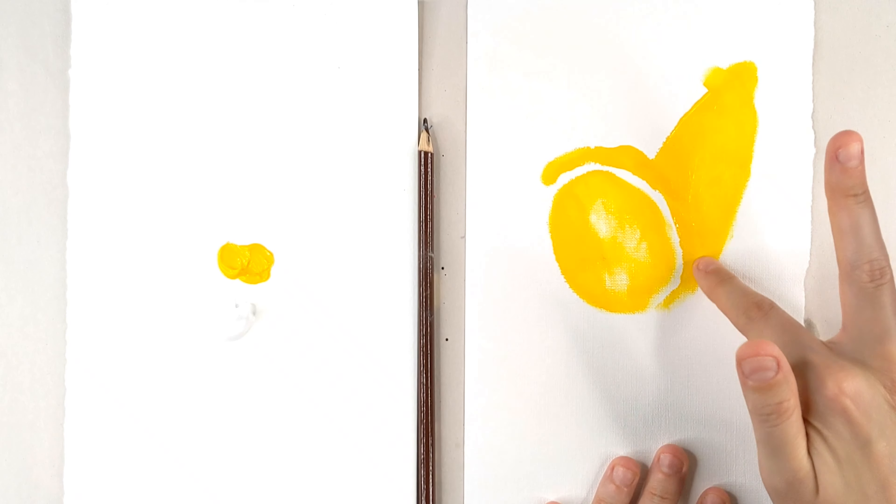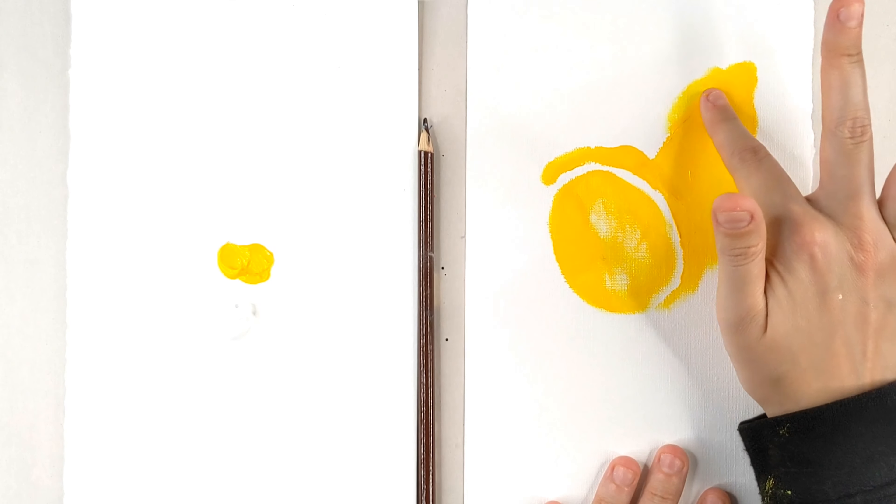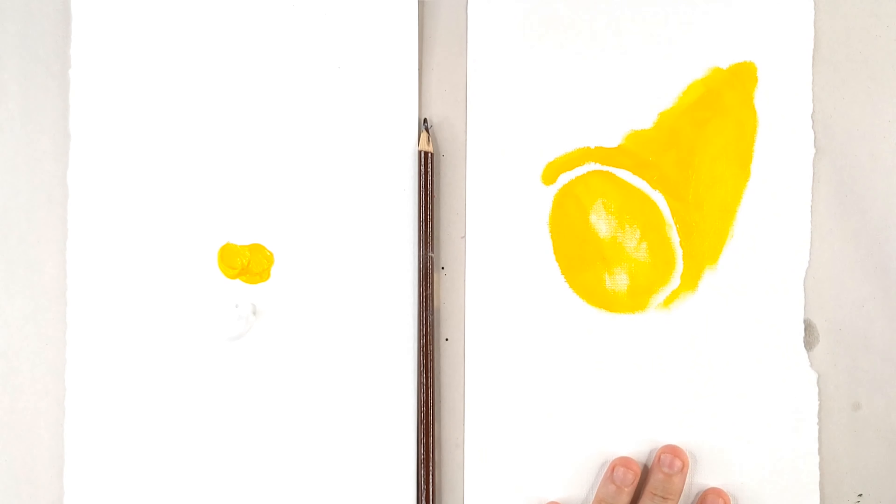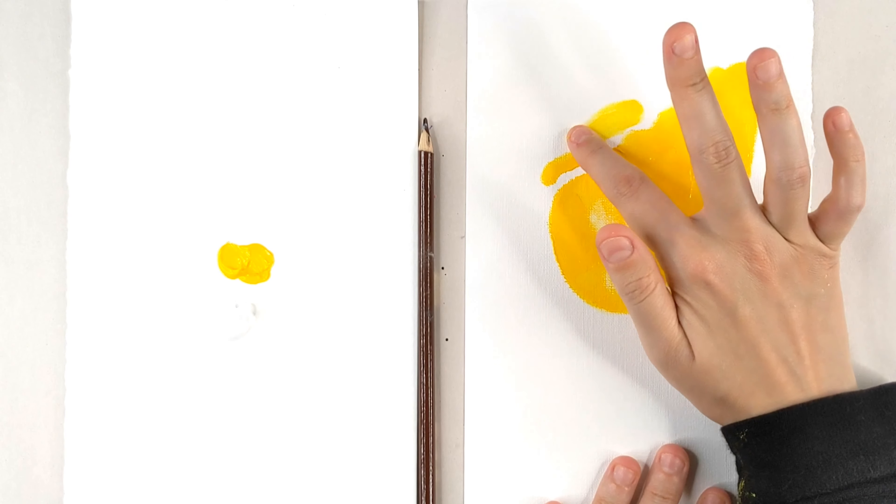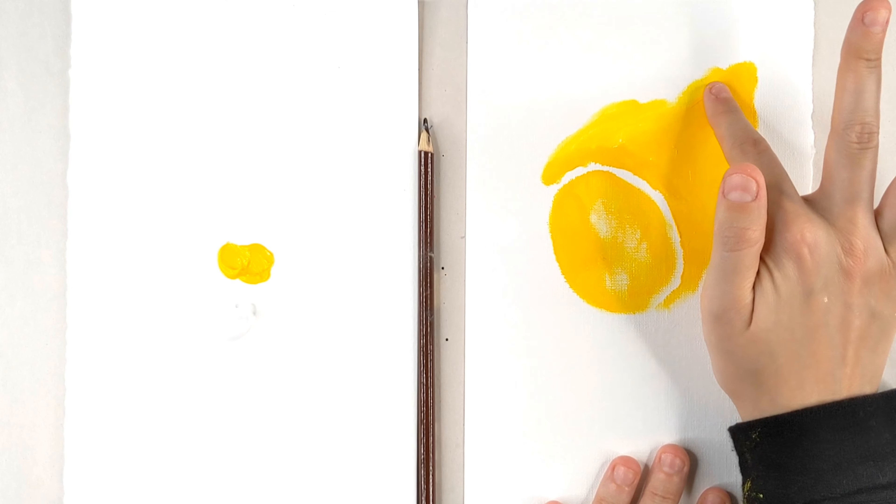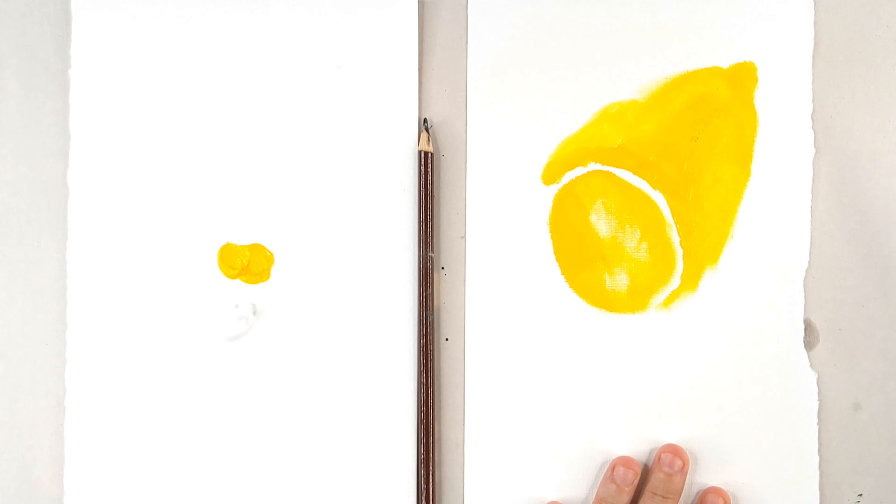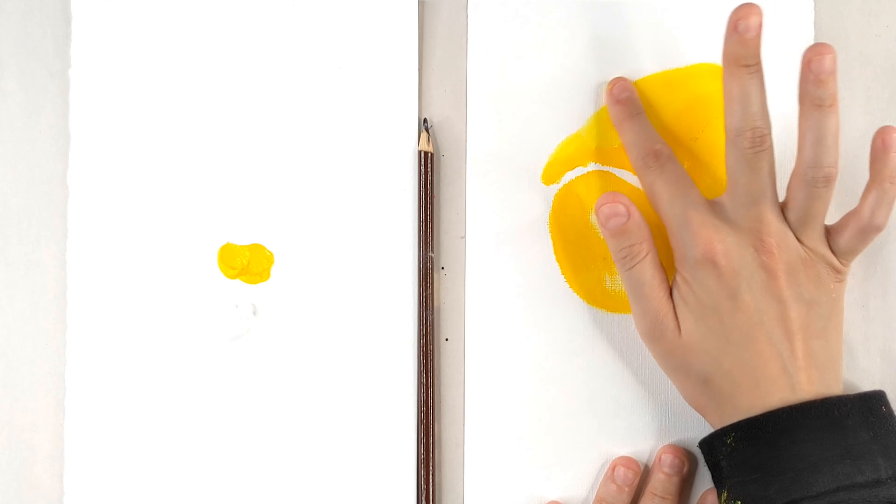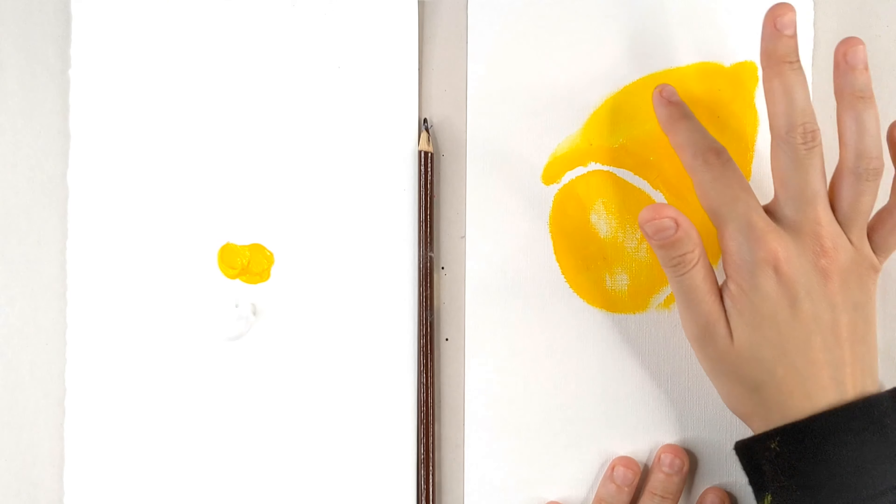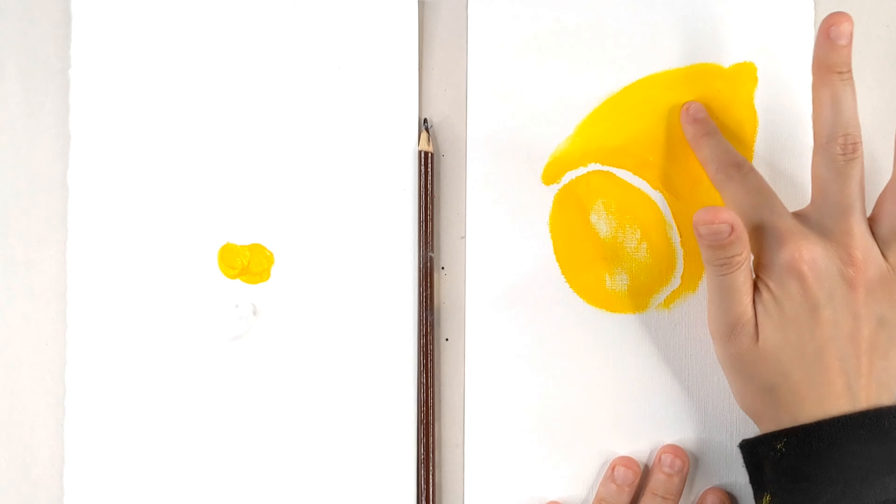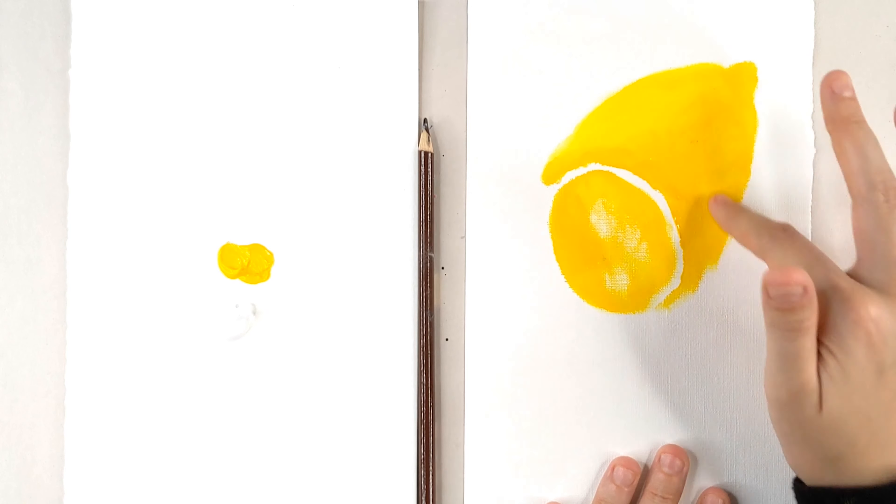Lemons are fun and super easy because you only need to have one maybe two colors in order to paint a lemon. Using the water I'm thinning it down just a little bit to make it easier for my fingers to blend, but also it creates this beautiful bright lemony shade.